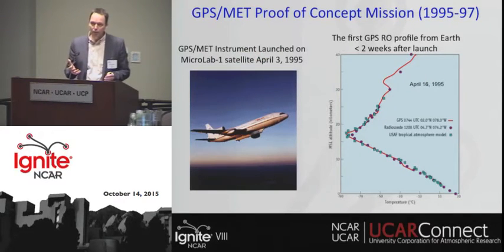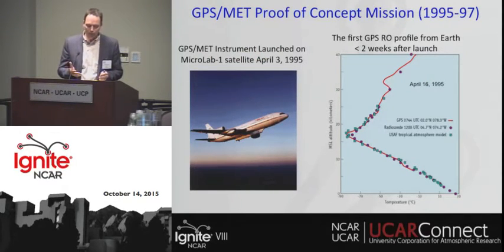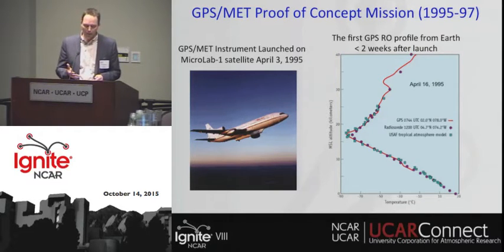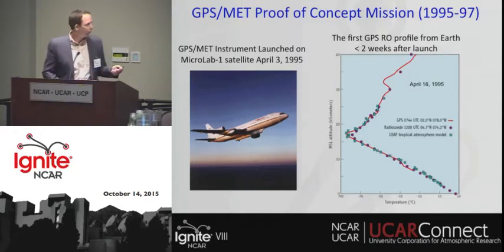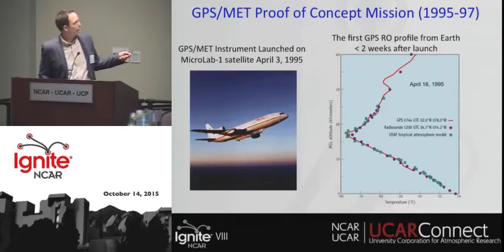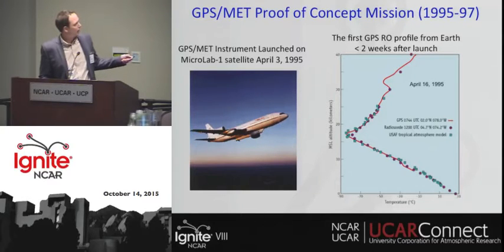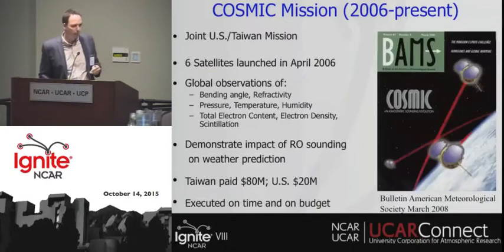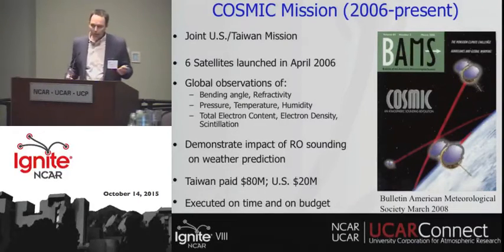NSF funded UCAR in the early 90s for the GPS/MET mission, really to prove the concept. The plot on the right — the red line — is the radio occultation temperature profile, and we have model and radiosonde data that match very well. That led to COSMIC.